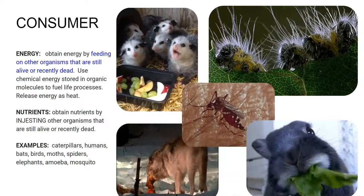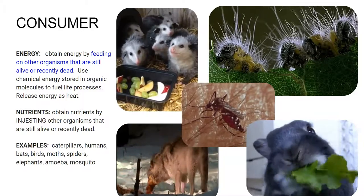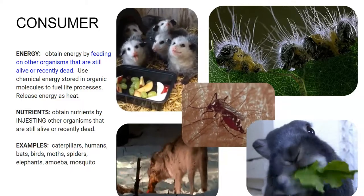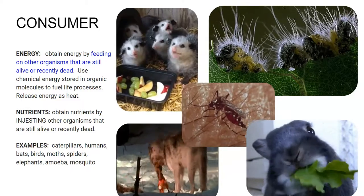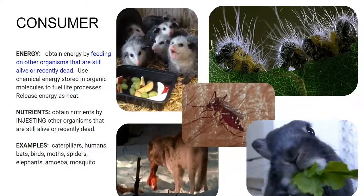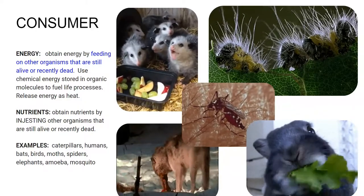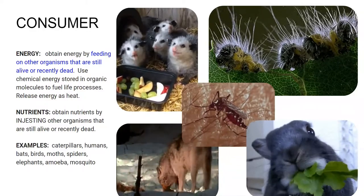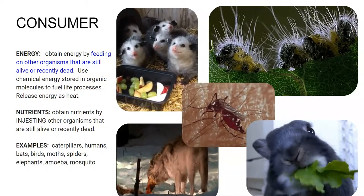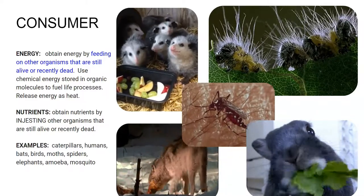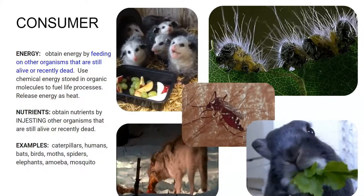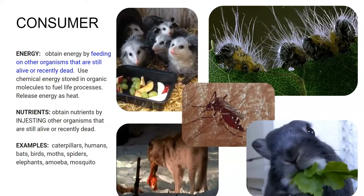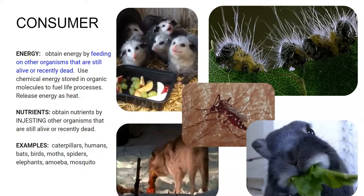A consumer is literally consuming the food that it's eating — it has a mouth and an anus. They obtain energy by feeding on other organisms that are still alive or recently dead. They use the chemical energy stored in organic molecules to fuel life processes and release energy as heat. They obtain nutrients by ingesting other organisms. Examples include caterpillars, humans, bats, birds, moths, spiders, elephants, amoeba, and mosquitoes — it's not just animals; protists can be consumers as well.